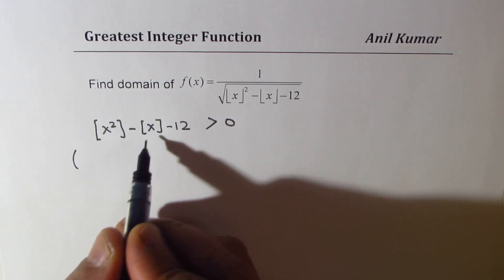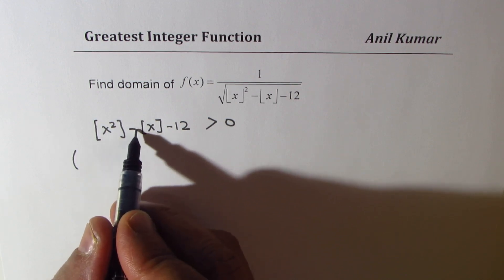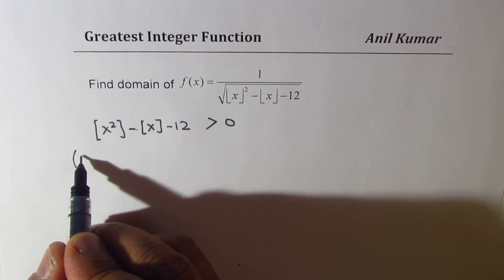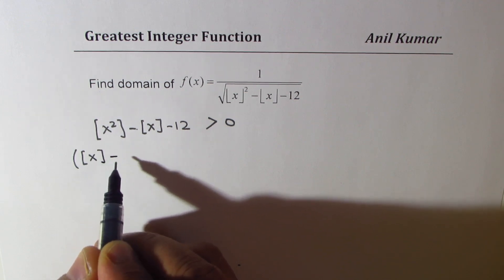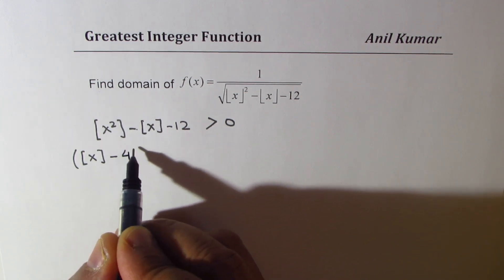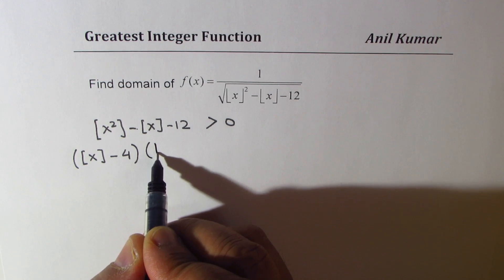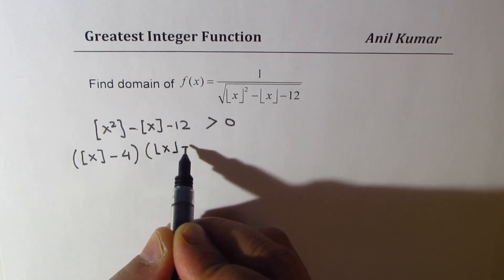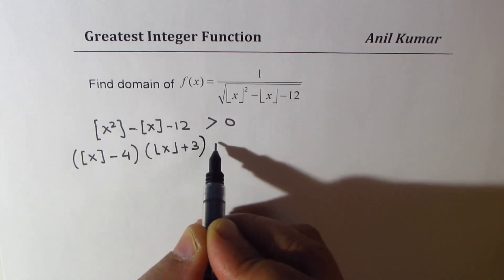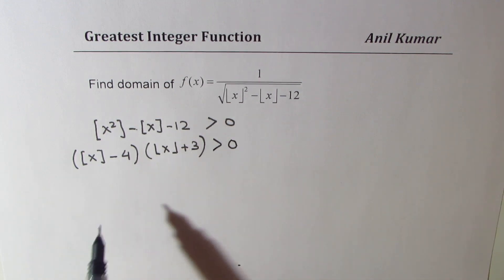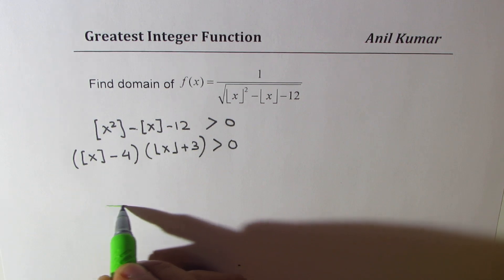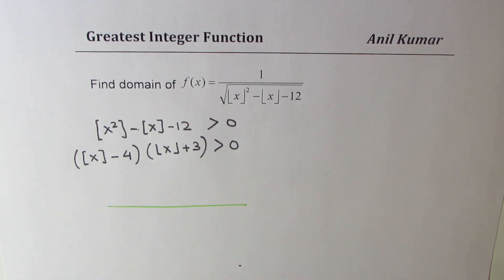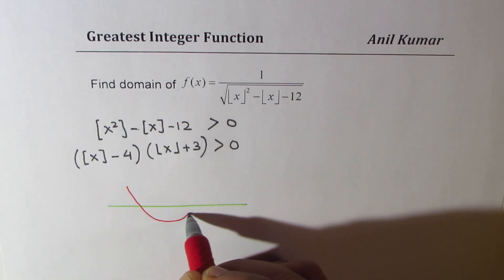We factor this: 4 times 3, positive 4 and negative 3, giving (⌊x⌋ − 4)(⌊x⌋ + 3) > 0. I prefer to sketch a parabola to analyze this. The roots are at ⌊x⌋ = −3 and ⌊x⌋ = 4, and the parabola opens upward, so the expression is positive when ⌊x⌋ < −3 or ⌊x⌋ > 4.